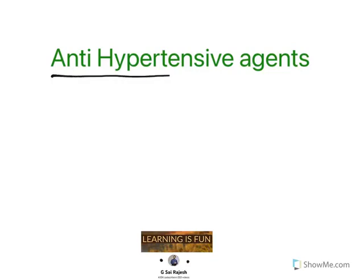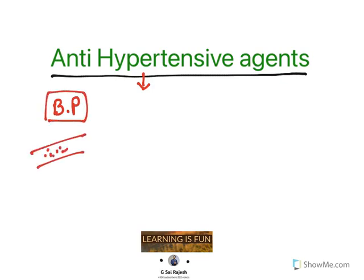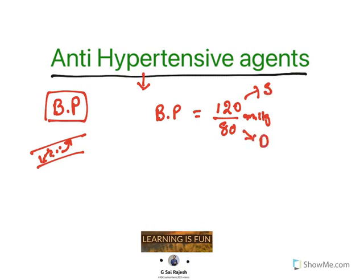Hello everyone, welcome to the video on antihypertensive agents. Let us understand about hypertension. Hypertension is increase in blood pressure. The pressure exerted by the blood on the walls of arteries is known as blood pressure. The normal values are 120 by 80 mmHg. 120 is systolic blood pressure, 80 is diastolic blood pressure. Anything greater than or equal to 140 by 90 is known as high blood pressure or hypertension.